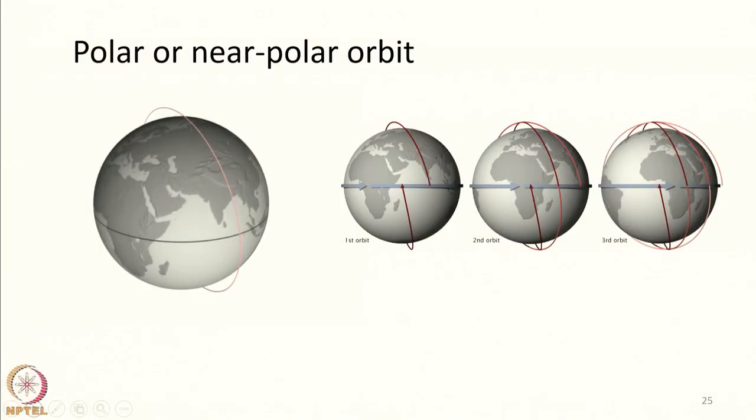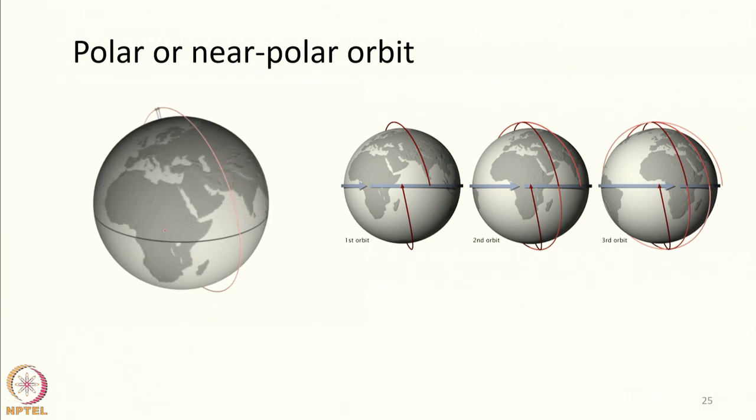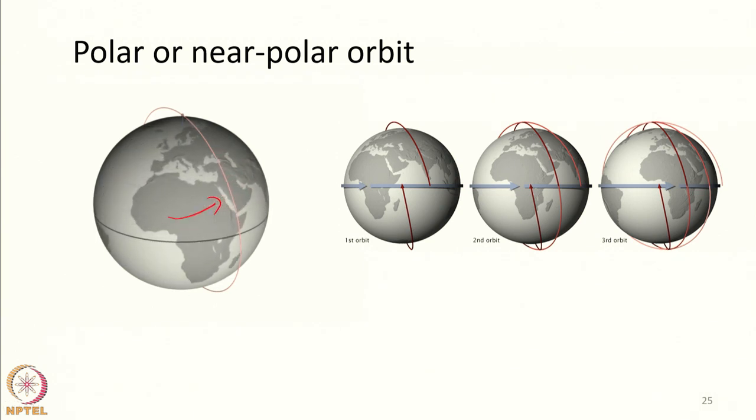The next class of orbit we are going to see is the polar or near polar orbit, which is one of the most widely used orbits for remote sensing purposes. In a polar orbit, the satellite appears to move from north to south. In a geostationary orbit, the satellite moves along the equator, whereas in a polar orbit it moves from north to south as depicted in this slide, with earth rotating underneath it.